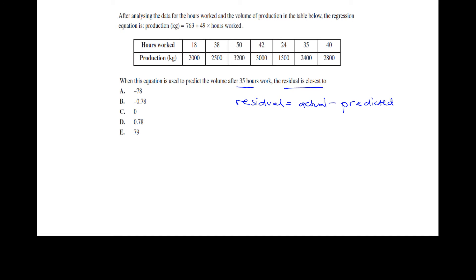Okay so the actual value means we go back to the table or the data or if it was a scatter plot we'd go back to the scatter plot that we've originally been given and look at where is 35 hours work and that's here and so the actual value is 2400 to get our predicted value we use the equation that we've been given and we substitute in 35 hours so our predicted in this case will be 763 plus 49 times 35 and so our predicted value there we end up with 2478 so that means my residual value will be my actual of 2400 minus my predicted of 2478 so i end up with negative 78 as my residual value and so then option a as my answer.